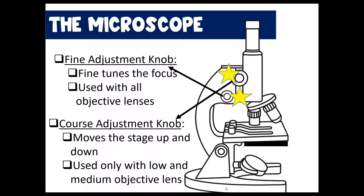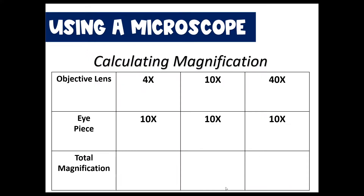You can only use the coarse adjustment knob when using the low and medium power objective lens. You can never use it with the high power objective, because that's the longer objective lens — it practically touches the stage. If you move the stage up with the high power objective set, you might crack the objective lens, the stage, or the specimen slide. So the coarse adjustment knob can be used with low and medium power, but never with high power.